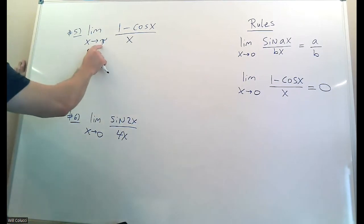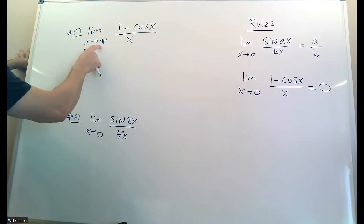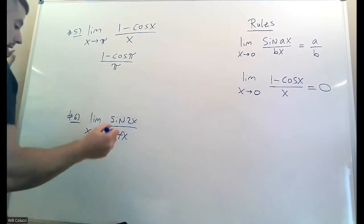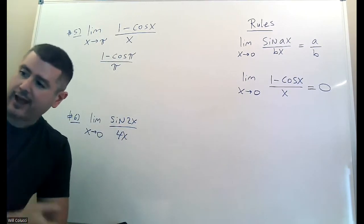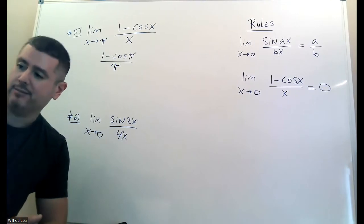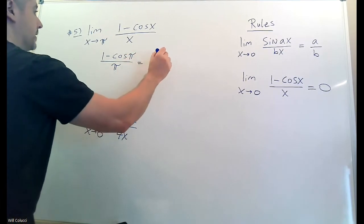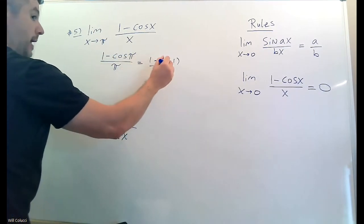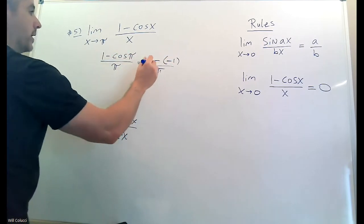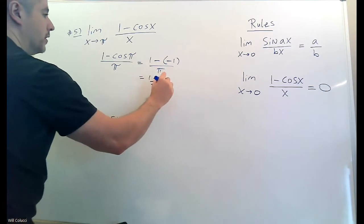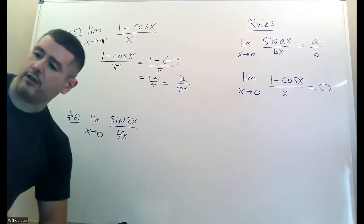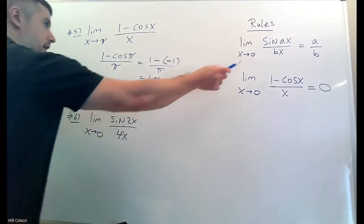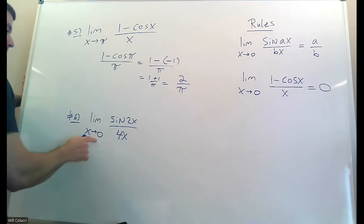X is not going to zero here — it's going to pi. All you can do is plug pi in for x and hope. If x is not going to zero and there's an x on the bottom, it's fine as long as the bottom isn't zero. Cosine of pi is negative one. So you have one take away negative one, which is one plus one — that gives two on top. Just plug the pi in and work it out. It's straightforward.